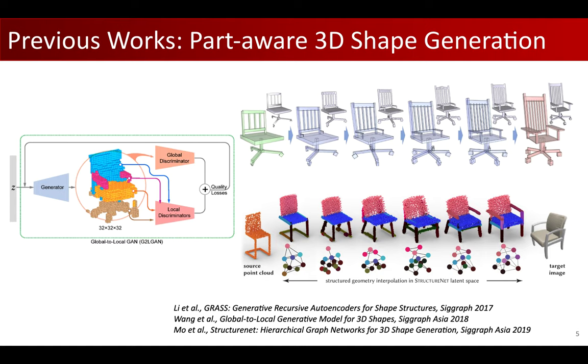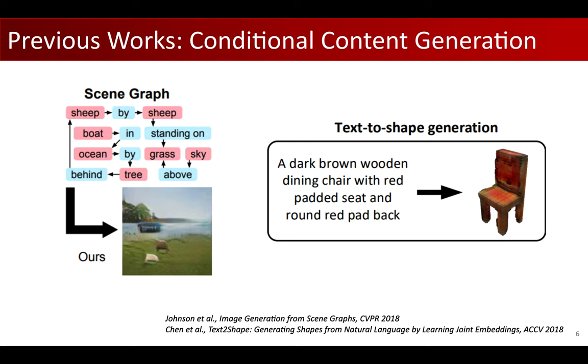There are also previous works studying content creation subject to certain conditions. Here I show two examples where 2D images or 3D shapes are generated from language descriptions or scene graph structures.